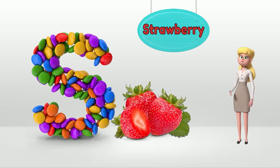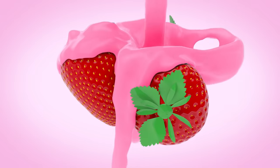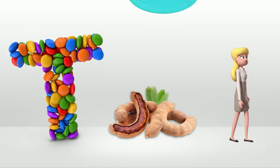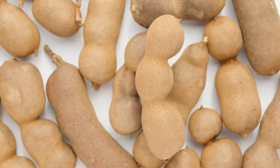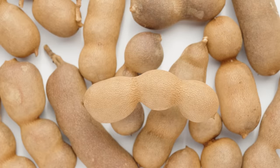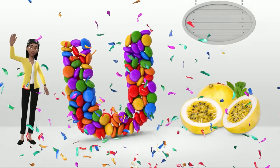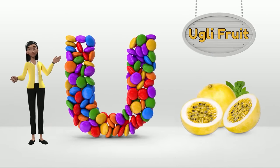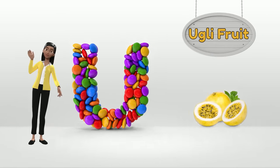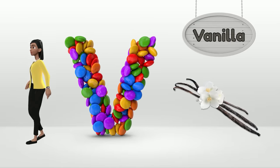S is for Strawberry. S, S, Strawberry. T is for Tamarind. T, T, Tamarind. U is for Ugly Fruit. U, U, Ugly Fruit.